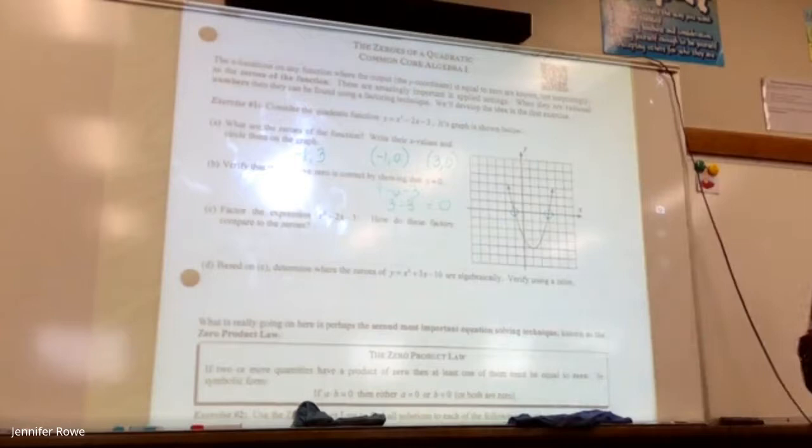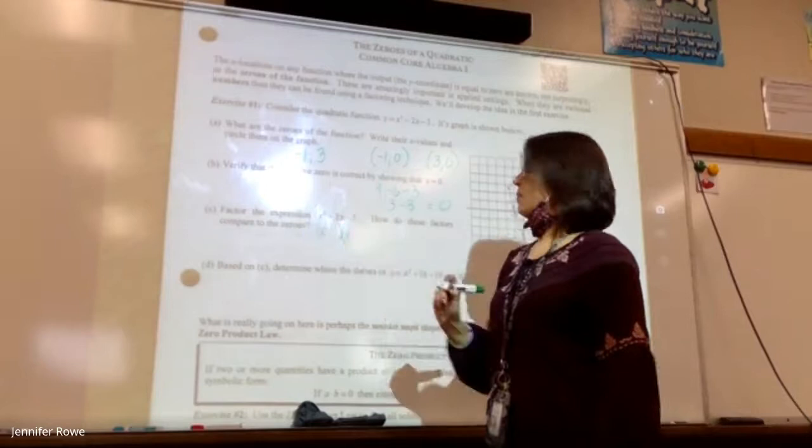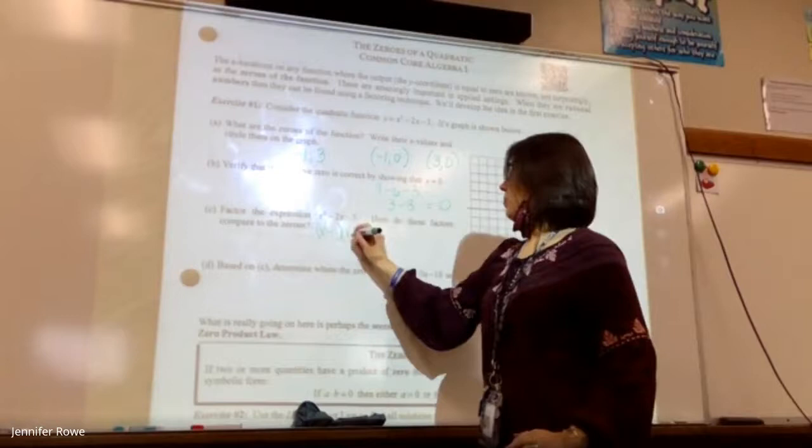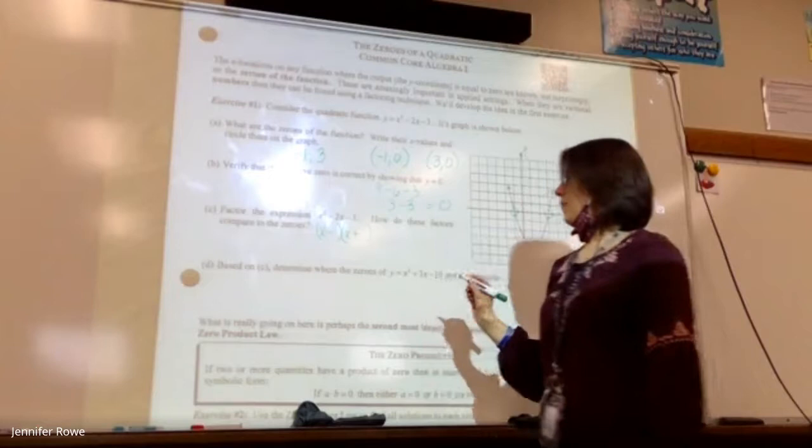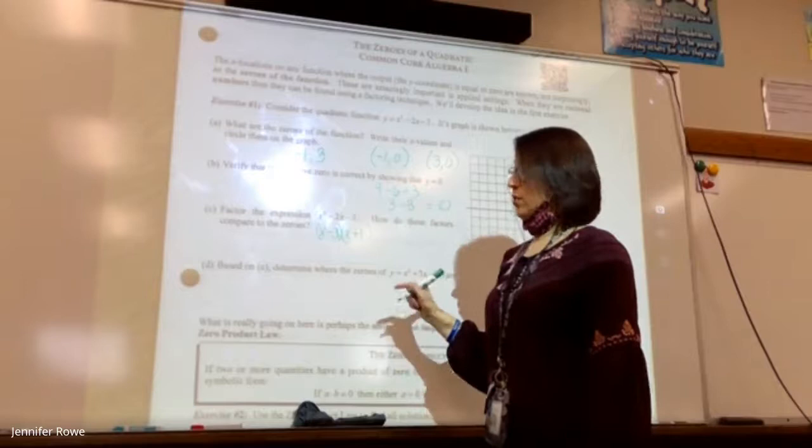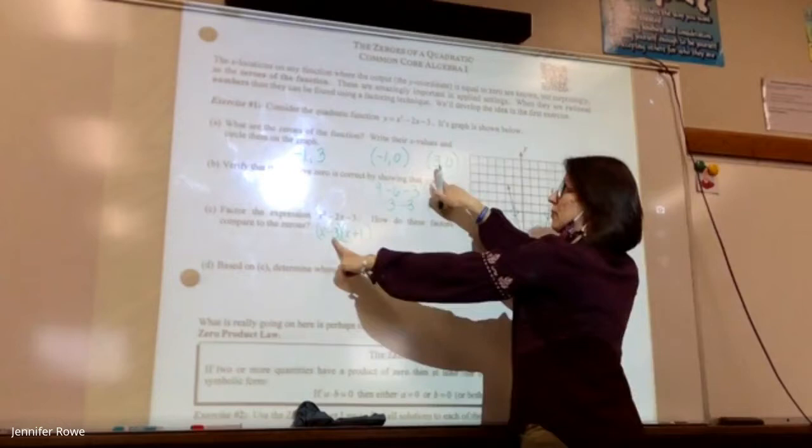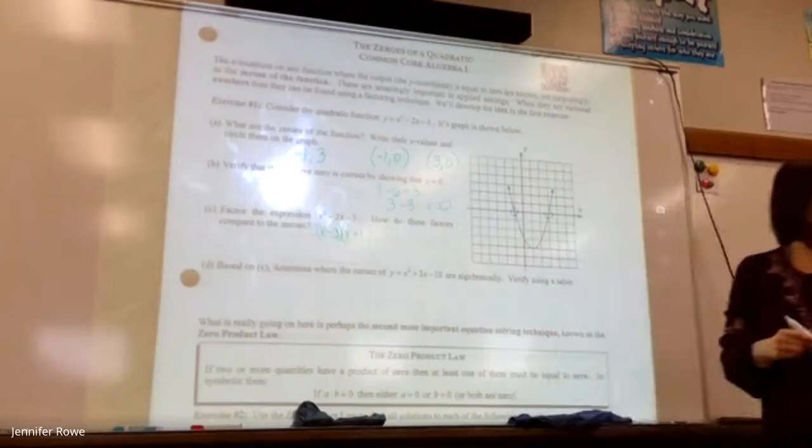Factor the expression x squared minus 2x minus 3. How do these factors compare to zero? This is unfoil. Give me signs. Negative and a positive. What do I need? A number that multiplies to be three and subtracts to be two. Three and one. What do you notice? It's the same thing, except the signs are the opposite of them.